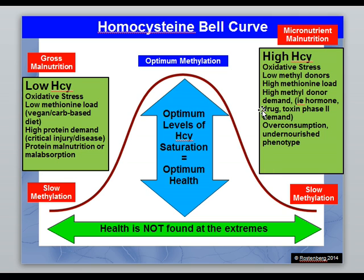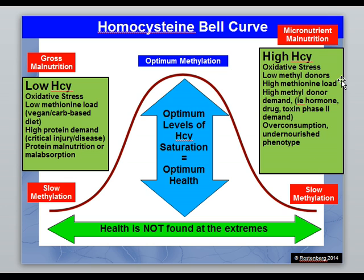High homocysteine is a bigger problem in our modern Western society. We're talking about the effects of toxins and an over-abundance of toxins combining with people in an over-consumption, undernourished phenotype — the metabolic syndrome: overweight, high blood pressure, elevated risk of cancer, heart disease, stroke, and depression. This is really all due to high homocysteine levels.